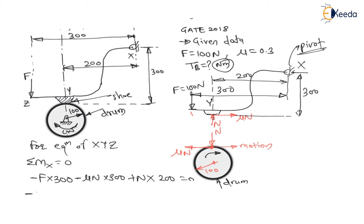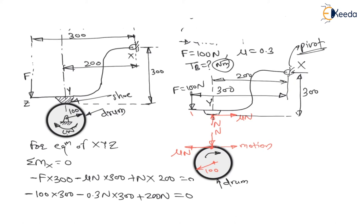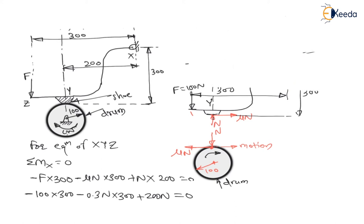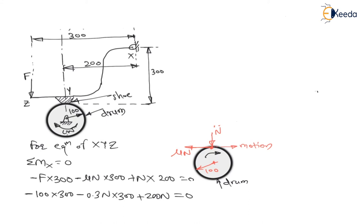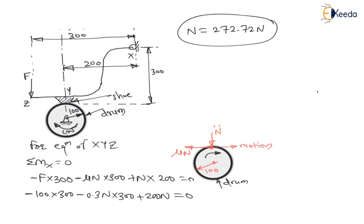Putting in the values: minus 100 into 300, minus 0.3*N into 300, plus 200*N equals 0. In this equation, only N is unknown. Solving for N, the value of the normal reaction N comes out to be 272.72 newton.